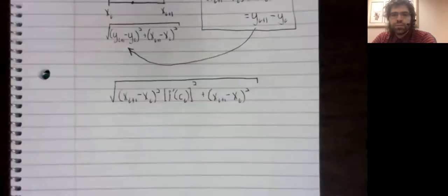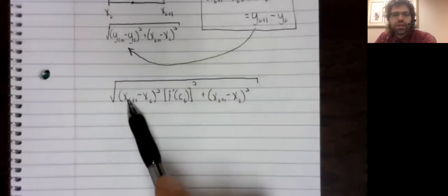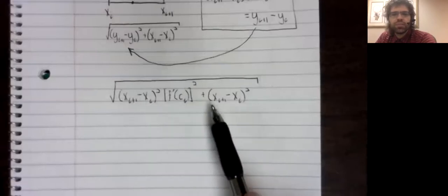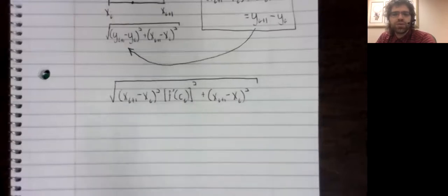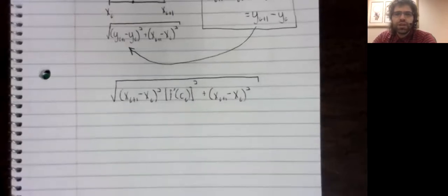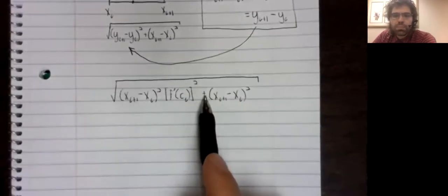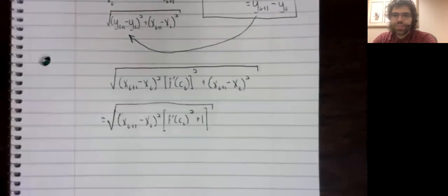When we do that, we get this and you see we have this term up here twice inside this square root. Let's pull it out of this sum. And then let's pull it out of this square root.